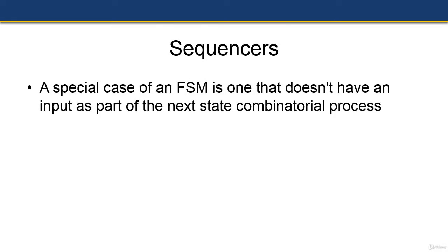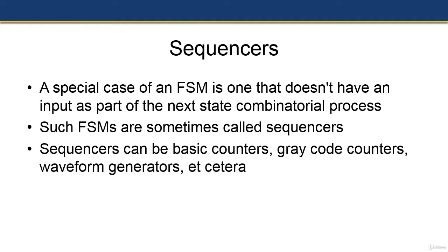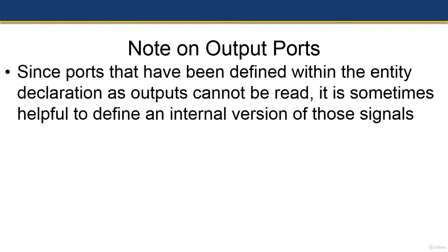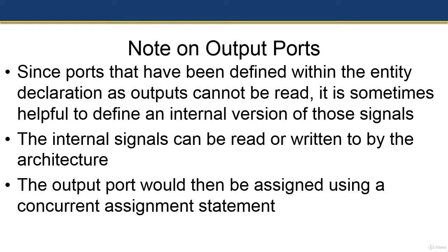A special type of finite state machine is one that has no input in its next-state combinatorial process. These are sometimes called sequencers and can include basic counters, gray code counters, waveform generators, and so on. One important note on output ports: since ports defined as outputs in an entity declaration cannot be read, it is helpful to define an internal version of those signals. The internal signals can be read or written by the architecture, and the output port is then assigned using a concurrent signal assignment statement.